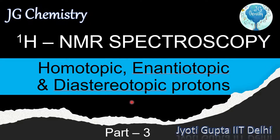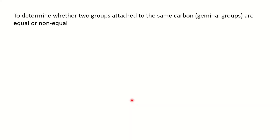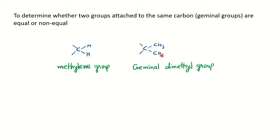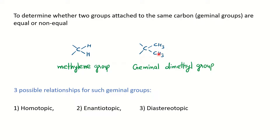Let's start. If you have a molecule with a geminal carbon — a CH₂ methylene group — the two protons are either homotopic, enantiotopic, or diastereotopic. This determines whether they give the same signal or couple with each other to give different signals. You may also have a geminal dimethyl group, and we will see whether those two methyls are equivalent or non-equivalent. Three possible relationships exist for geminal groups.